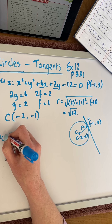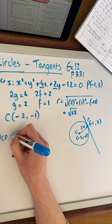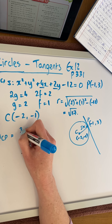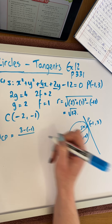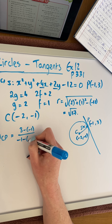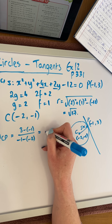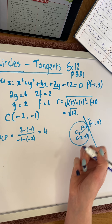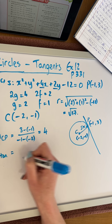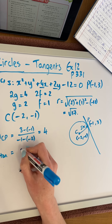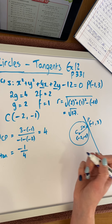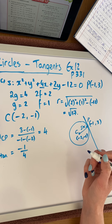Because a tangent is perpendicular to the radius at the point of contact, we first find the slope between center C and point P. The slope of CP is (3 − (−1)) / (−1 − (−2)), which gives us a slope of 4. The slope of the tangent is perpendicular to that, so we invert and change sign, giving us a slope of 1/4.